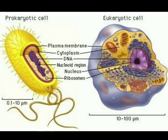So basically cells make up plant and animal. Now, according to the nature of the cell, it can be divided into two types: prokaryotic and eukaryotic cell.